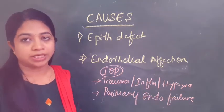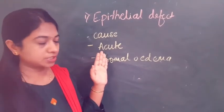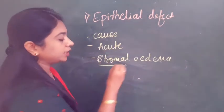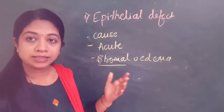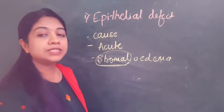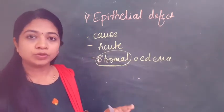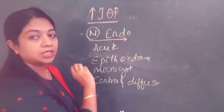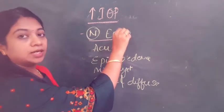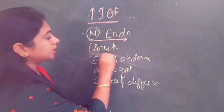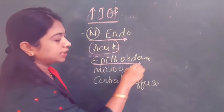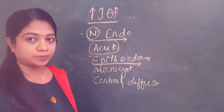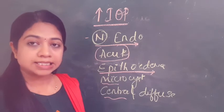Corneal edema secondary to epithelial defect is usually acute in onset, presenting with surrounding stromal haze — don't confuse this with epithelial edema; it is the stromal edema surrounding the defect, identifiable by fluorescein staining. When corneal edema is secondary to raised IOP in the presence of normal endothelium, it is acute in onset and presents as epithelial edema ranging from haziness to microcystic formation to bullous keratopathy, either central or diffuse.